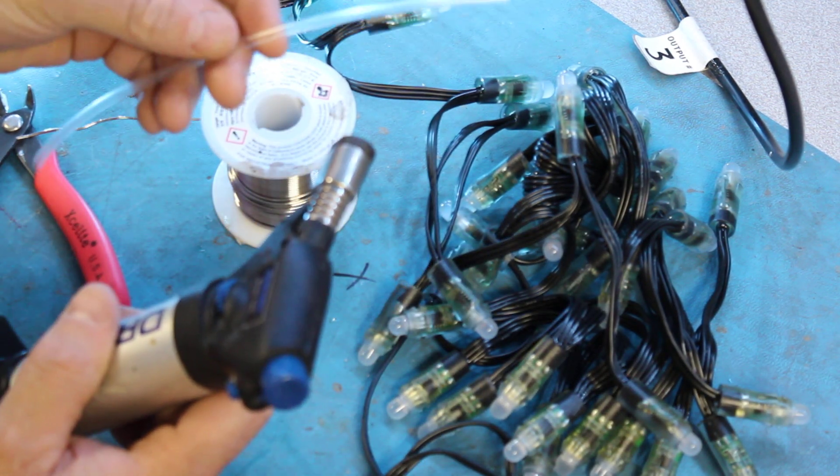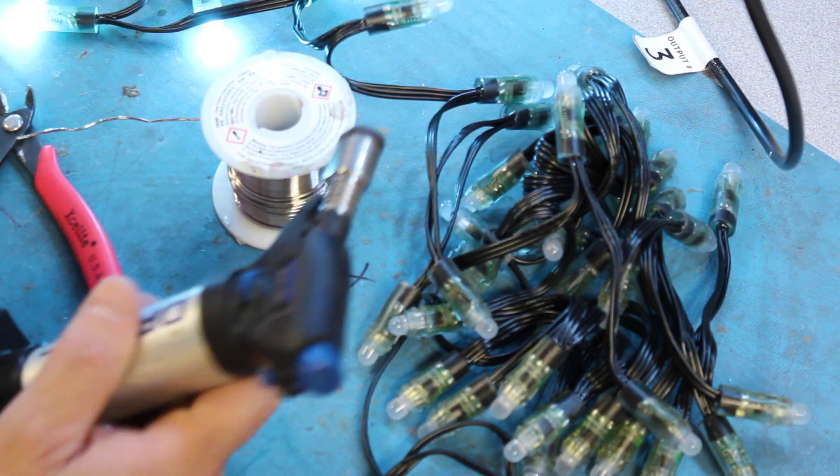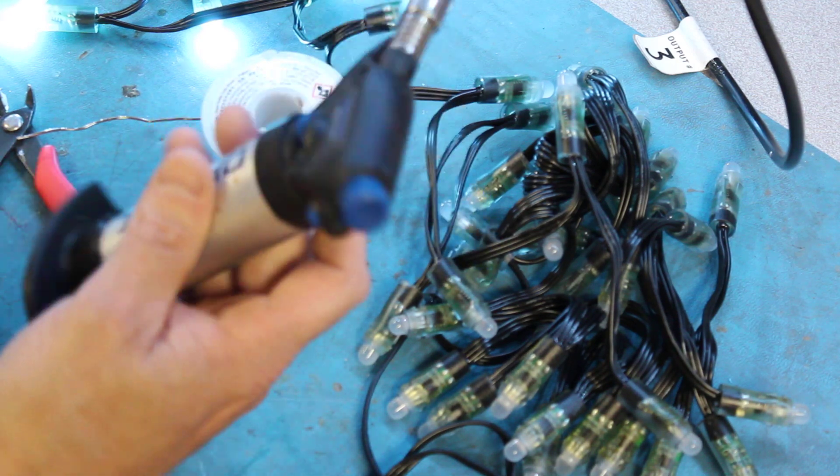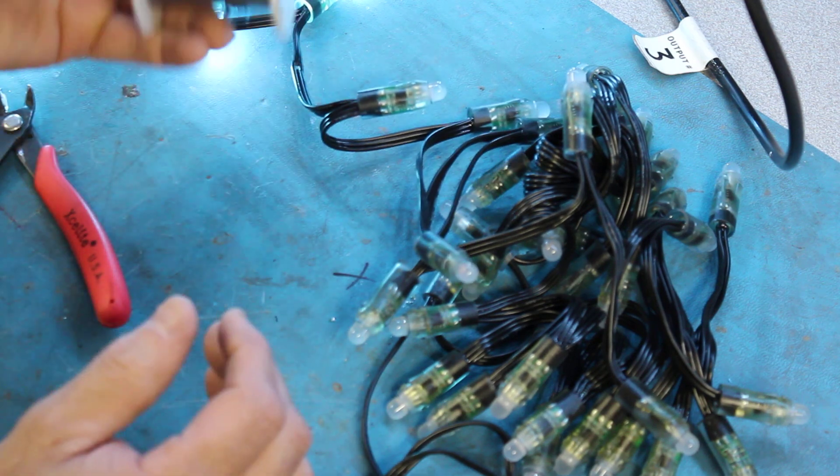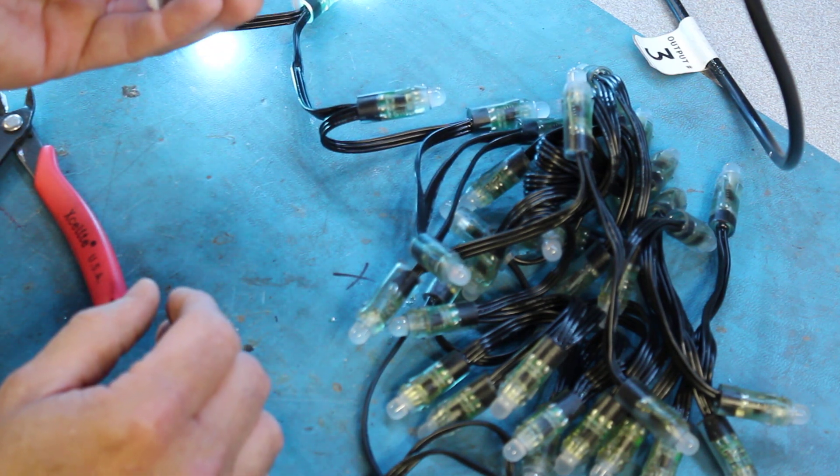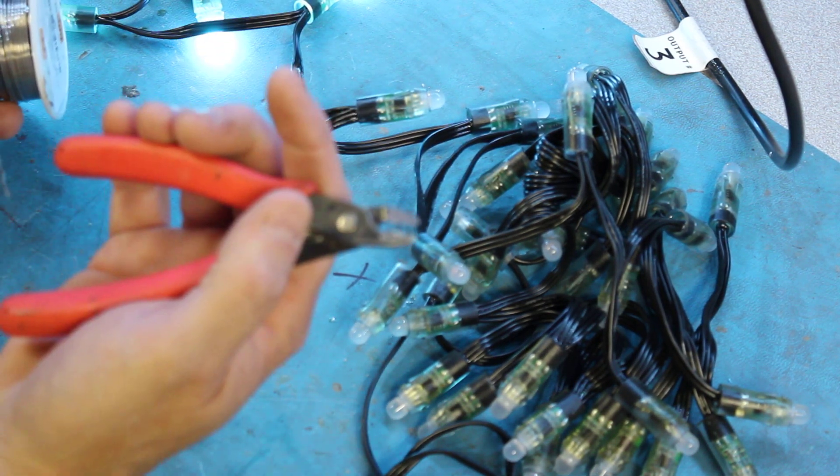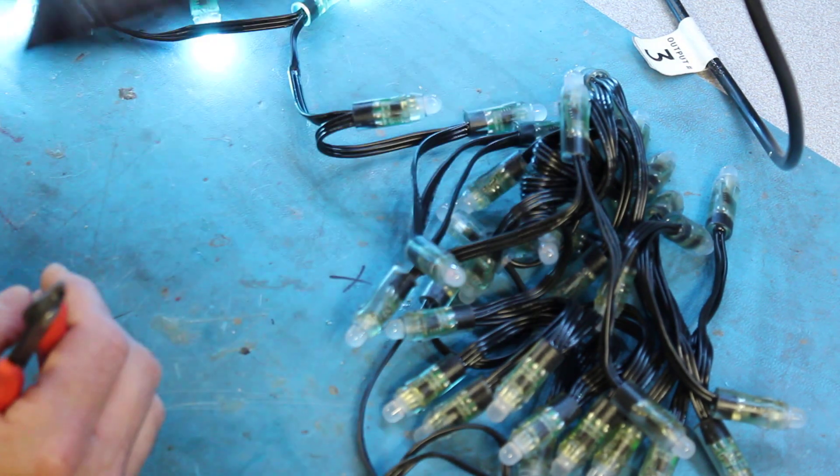We have some shrink tubing. This is eighth-inch clear shrink tubing, just a simple torch. You can also use a lighter. We also have some 60-40 solder. I have some dykes to cut, and of course, I have a soldering iron.